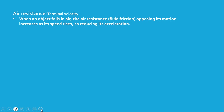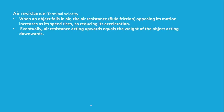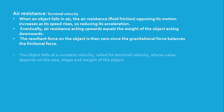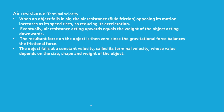Air resistance has the property of catching up with the driving force causing acceleration. The air resistance opposing motion increases as speed rises, reducing acceleration. Eventually, the air resistance acting upward equals the weight acting downward. When weight equals air resistance, the resultant force becomes zero, and since the object was moving, it continues at a constant velocity called terminal velocity.